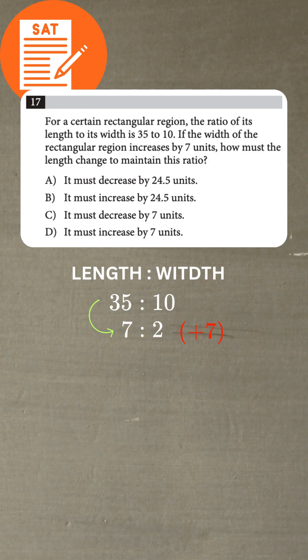So, let's look at the scale factor. If the width increases by 7, we divide 7 by our base width of 2. 7 over 2 equals 3.5.